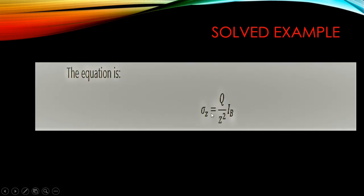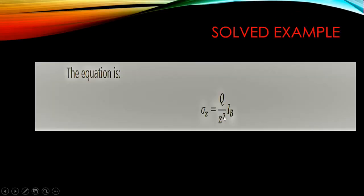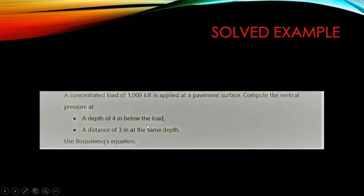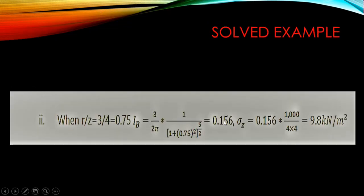The vertical pressure at a horizontal distance of three meters is: sigma = (q / c²) × Ib. Substituting q = 1000 kN, c = 4 meters, and Ib = 0.156: sigma = 0.156 × 1000 divided by four squared. The vertical pressure at three meters distance is 9.8 kilonewtons per meter squared. Thank you for watching — make sure you click the subscribe button.